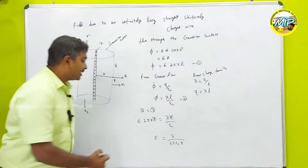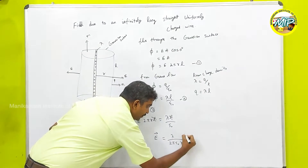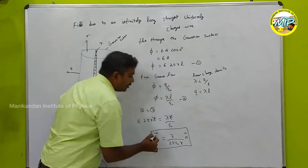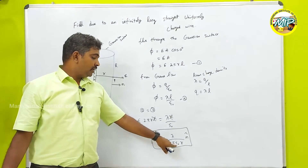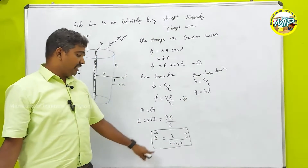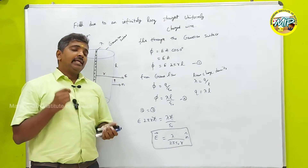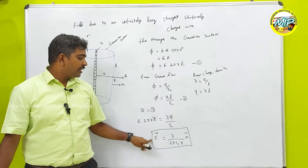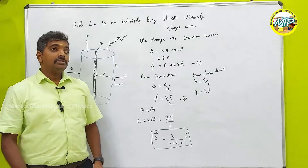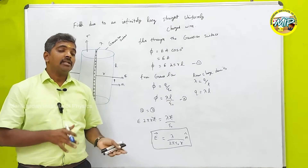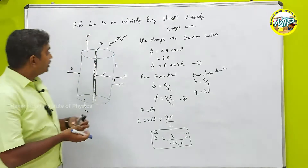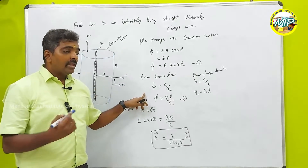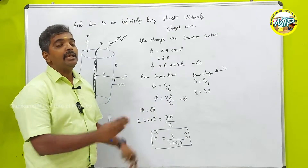Equating equation 1 and equation 2: E × 2πRL = λL / ε₀. The L cancels on both sides, giving E = λ / (2πε₀R). Written as a vector, this is the electric field at point P. Notice that for a point charge E is inversely proportional to R squared, whereas for an infinitely long uniformly charged wire, E is inversely proportional to R — the field decreases more slowly with distance.